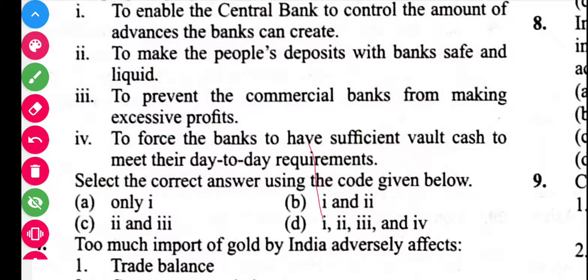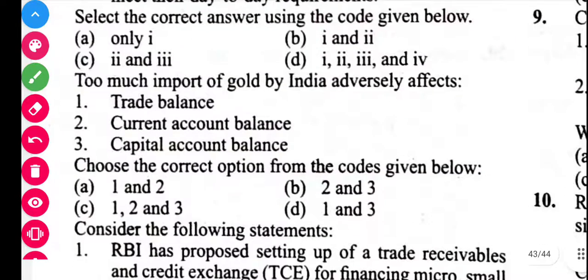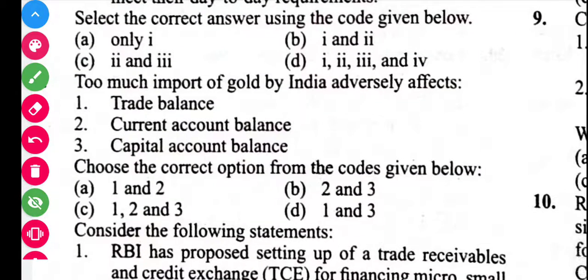Next question is related to the import of gold. Too much import of gold by India adversely affects: trade balance — yes; current account balance — yes; capital account balance — no, because gold import is not considered under capital account balance. So statements 1 and 2 are correct.